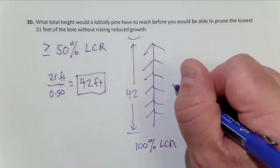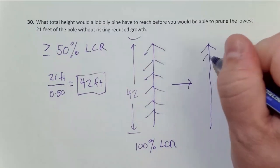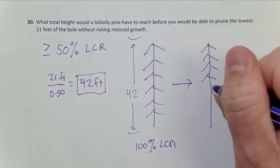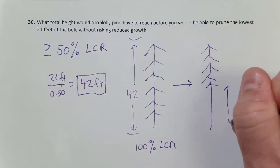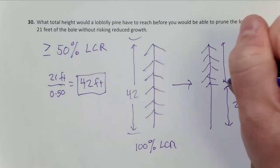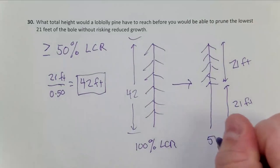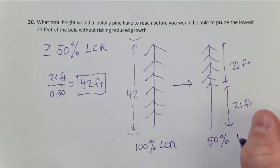So even if it was less, it would work fine too. And then following pruning, our tree now has 21 feet pruned, 21 feet with live crown. And so this has given us 50% live crown ratio.